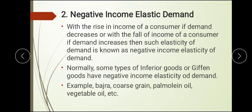Examples of inferior goods include bajra, coarse grain (poor quality or lower quality grains), and vegetable oils. These goods are demanded more when income is low. But when income increases, people stop consuming bajra and coarse grains and shift to normal food grains and pulses. This demonstrates the inverse proportionate relationship between income and demand for inferior goods.